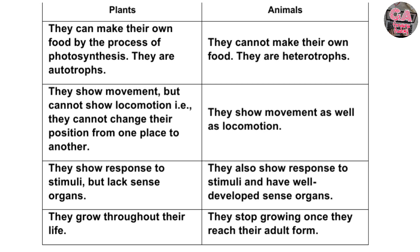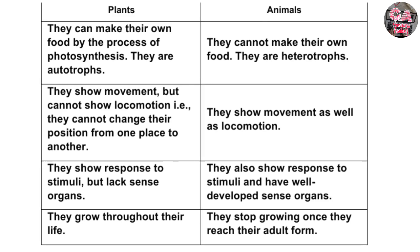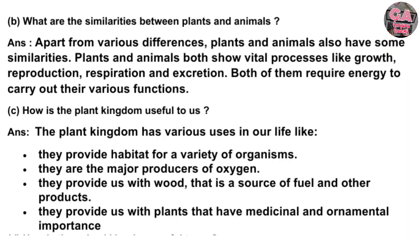Animals show movement as well as locomotion. Plants show responses to stimuli but lack sense organs, whereas animals also show responses to stimuli and have well-developed sense organs. Plants grow throughout their life, while animals stop growing once they reach their adult form.